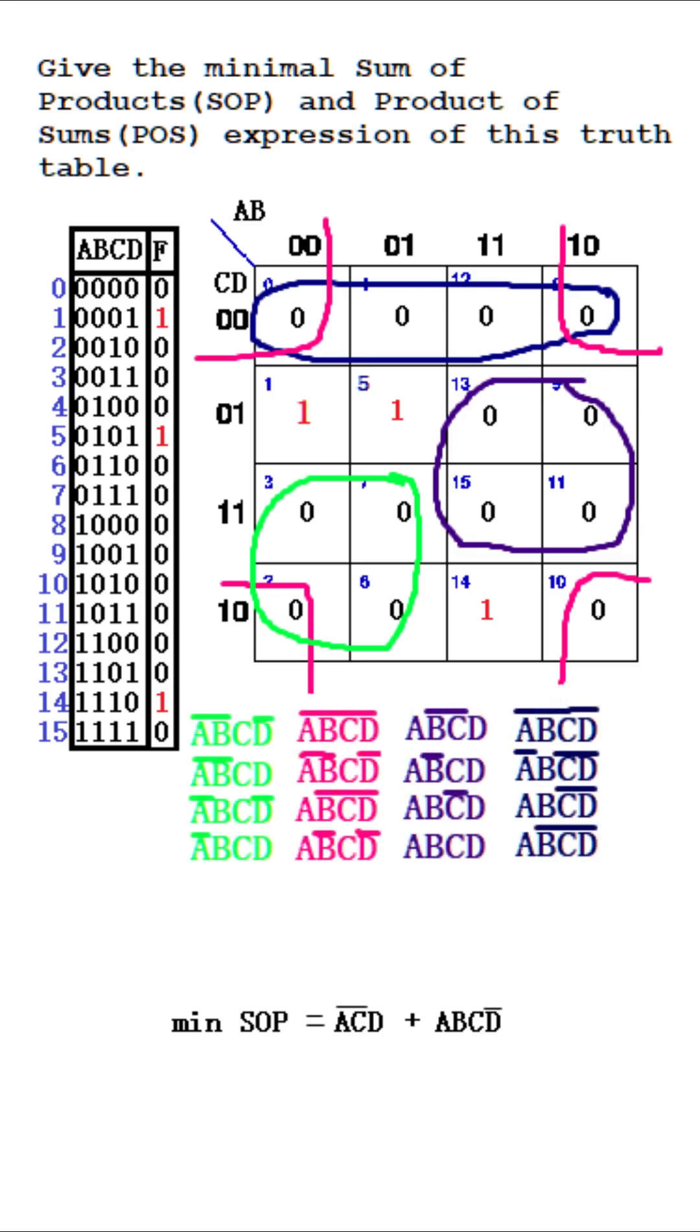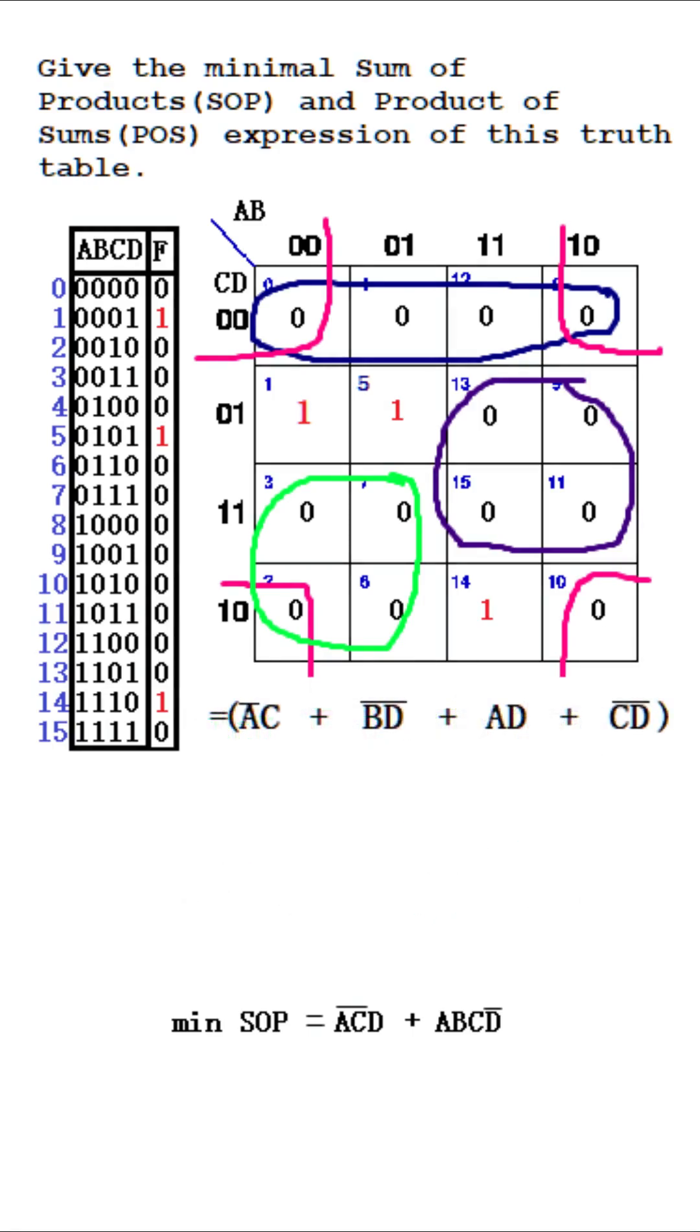Now for the maxterms cluster, which we managed to make four groups out of, giving us four product terms. But since we want the summed terms for the POS, we then apply De Morgan.